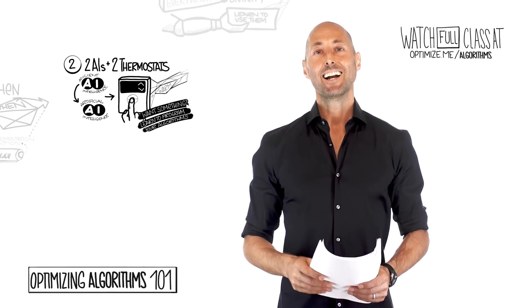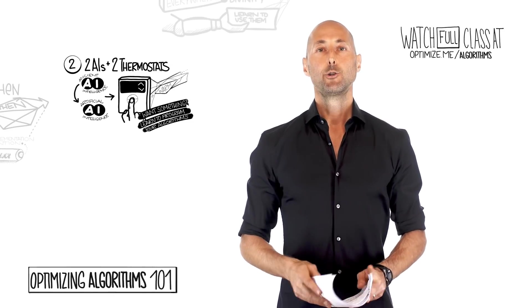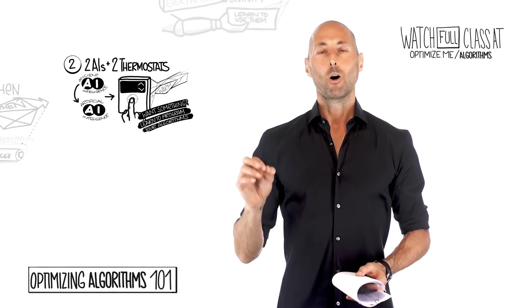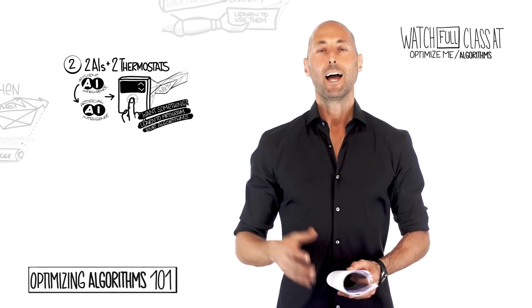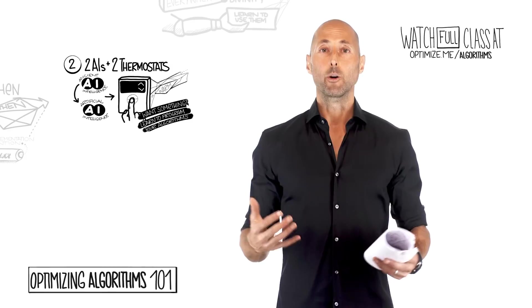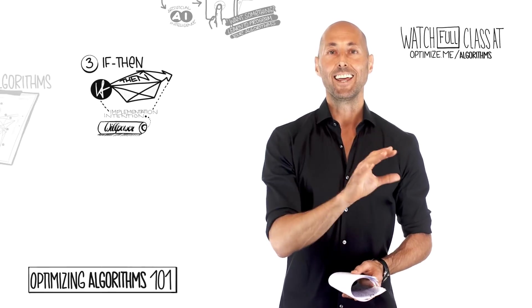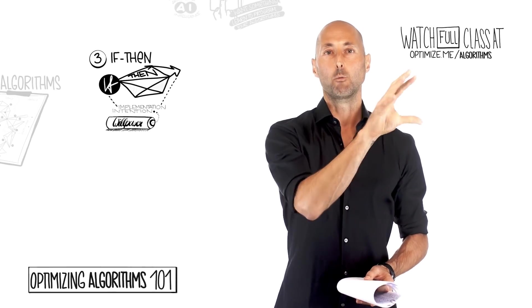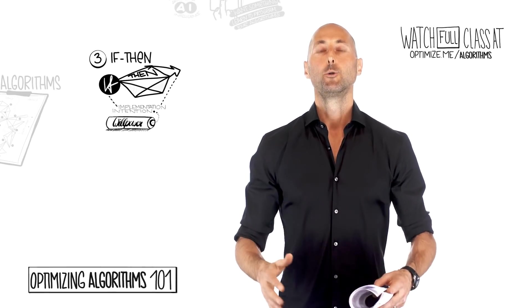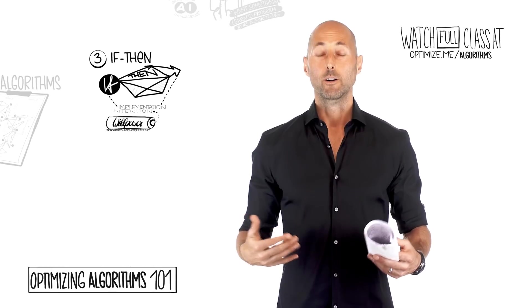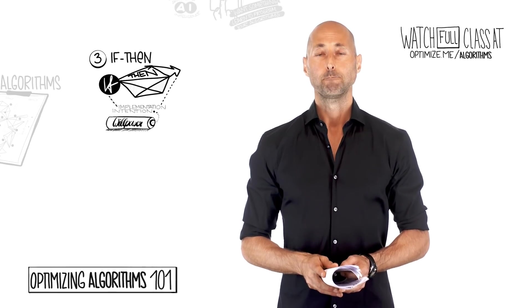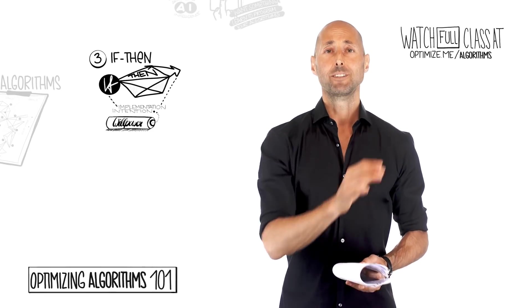The third big idea is to connect those two guys to modern positive psychology. Guess what? The number one psychological behavioral hack is an algorithm. They call it if-then, implementation intentions. If this happens, then I will do that.